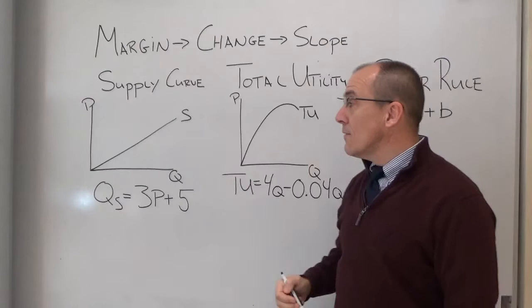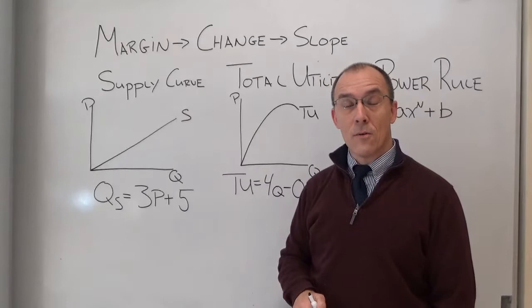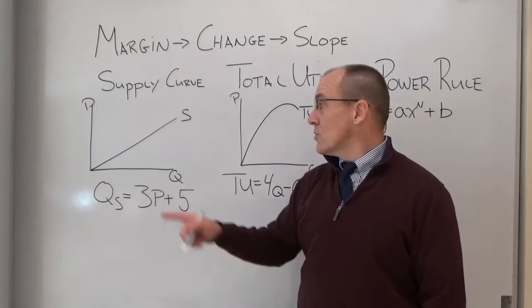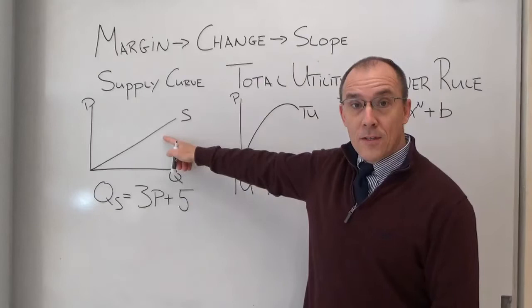To give you an idea based on something we've already talked about, think about the supply curve. The supply curve talks about how a change in price causes a change in the quantity supplied. There is a relationship going on there. We might be interested in how much the supply curve will change in response to a change in price. What might be the margin there? What is the change? Well if we can calculate out the slope of this line, we can find out what the rate of change is.